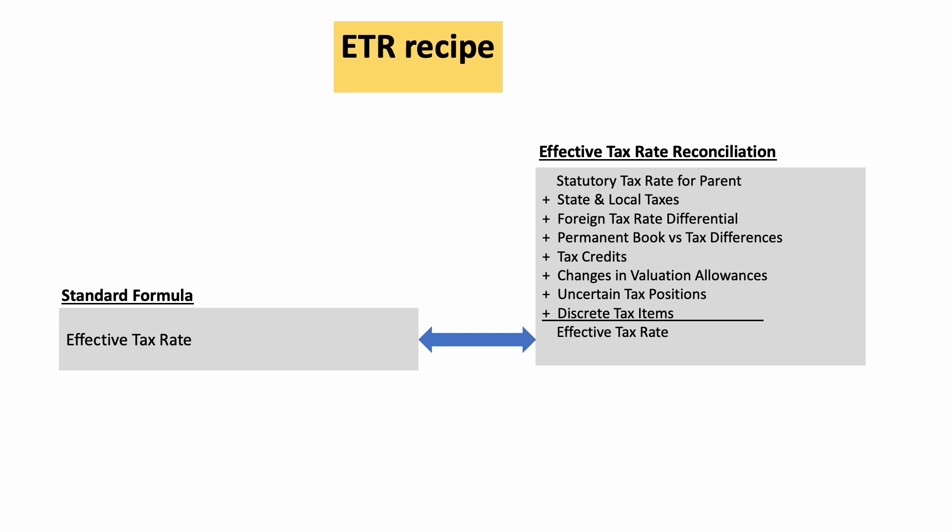The second item is the foreign tax rate differential, which means that if you are operating in more than one country you are subject to different tax rates. The tax rate in the country you are operating in could be less than the US tax rate or it could be more than the US tax rate, and that flows into your ETR reconciliation.